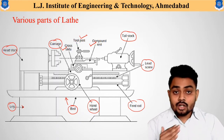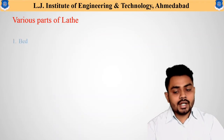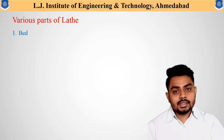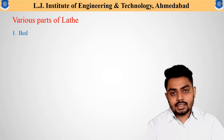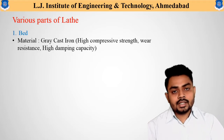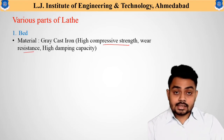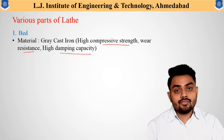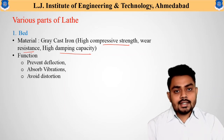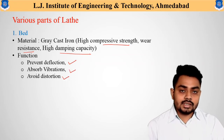Now we will discuss each part in detail. The first one is the bed. This bed provides support to the entire lathe machine. The material used is grey cast iron, because grey cast iron has high compressive strength, high wear resistance, and high damping capacity — meaning it can absorb vibration very easily. The function of this bed is to prevent deflection, absorb vibration, and avoid distortion of the lathe machine during loading conditions.